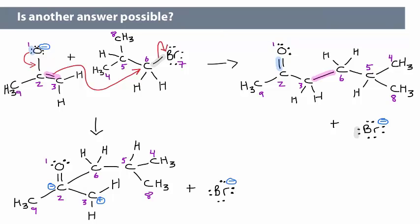We still have the oxygen-carbon-pi bond. The carbon-2-carbon-6 bond is now present, and the bromine still has taken the electrons from the carbon-6-bromine-7 bond. There is a problem with this structure. Can you identify it?